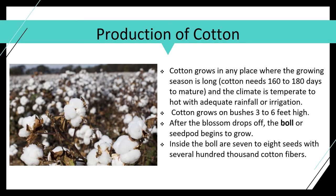The production of cotton — cotton grows anywhere where the growing season is long. It needs 160 to 180 days to mature and needs a hot climate with adequate rainfall and irrigation. That's why the southern United States is perfect for it. The leading producers right now are India, Pakistan, and China.